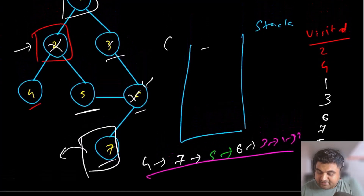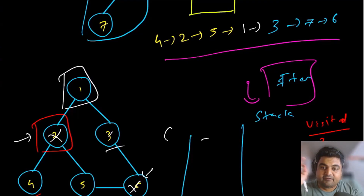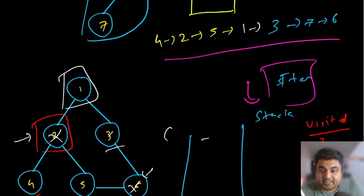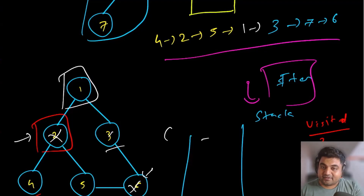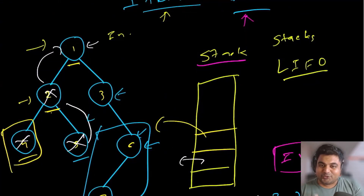Everything we did, we did not use recursion — we used the iterative method using stacks. This is a key point to remember: whenever you have to implement DFS iteratively, you must use a stack — this is the golden rule. Every interviewer, if you show them a recursive solution, is going to ask you whether you can do it iteratively. If you show them an iterative solution, they'll ask you to do it recursively. So it's good to know both methods.